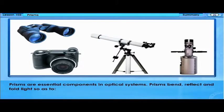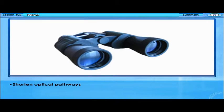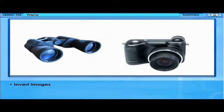Prisms are essential components in optical systems. Prisms bend, reflect, and fold light so as to change the line of sight, shorten optical pathways, and invert images.